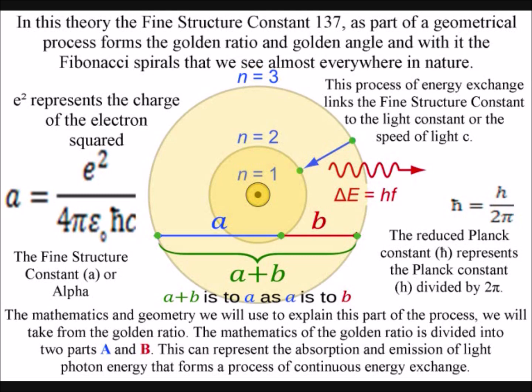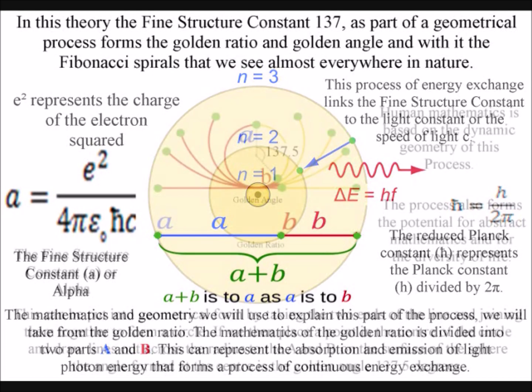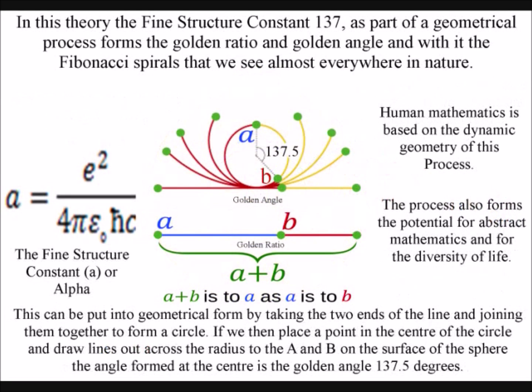This can be put into geometrical form by taking the two ends of the line and joining them together to form a circle. If we then place a point in the center of the circle and draw lines out across the radius to the a and b on the surface of the sphere, the angle formed at the center is the golden angle 137.5 degrees.